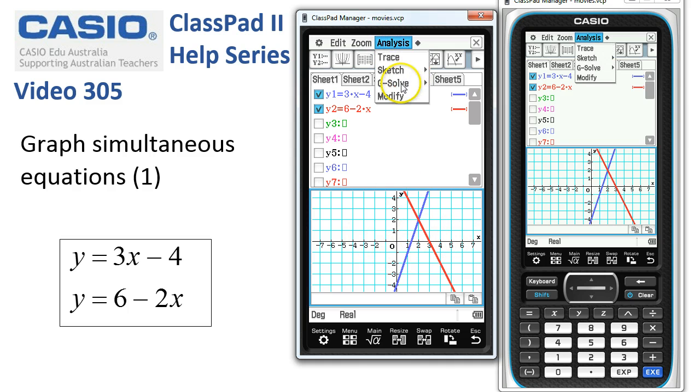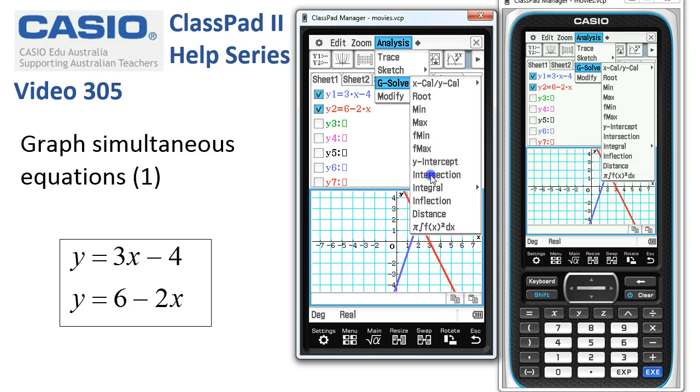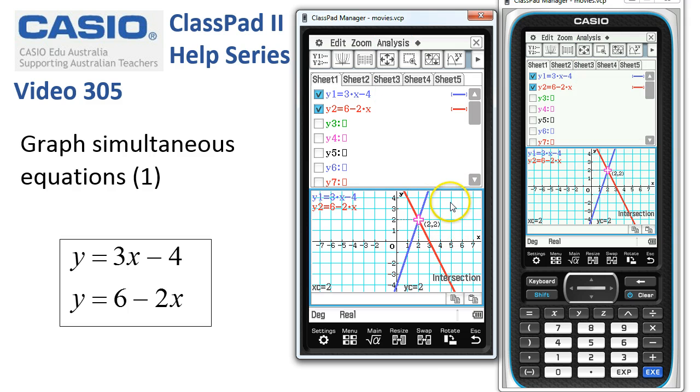We can always use Analysis, G-Solve, Intersection for the point of intersection and the coordinates are given at the bottom of the screen. 2, 2 is our solution to that one.